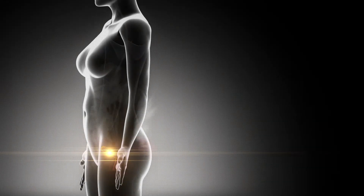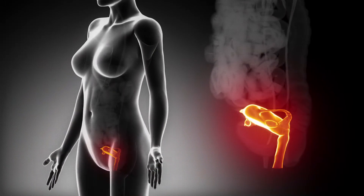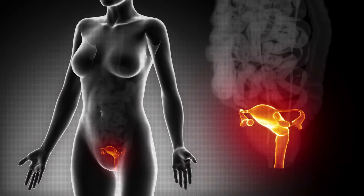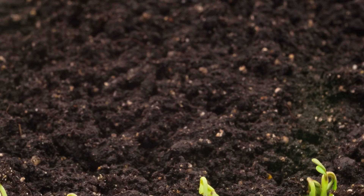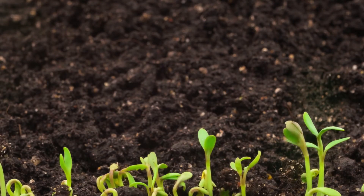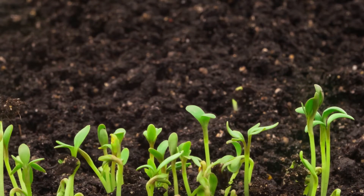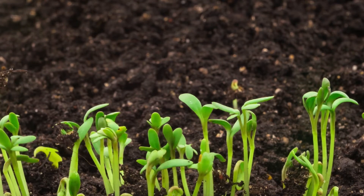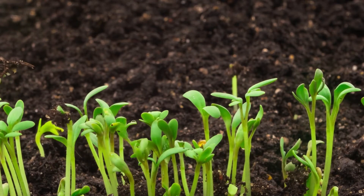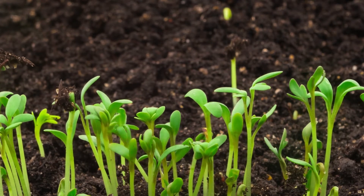The innermost layer of the uterus covering the uterine cavity is called the endometrium. It is a dynamic tissue and its characteristics vary throughout the menstrual cycle. Its most important function is to engage in dialogue with the embryo so that the latter can implant and the uterus can serve as a suitable place for a pregnancy to develop.